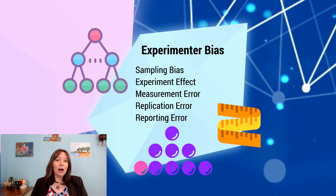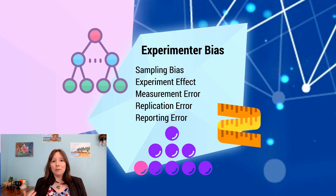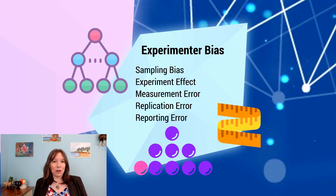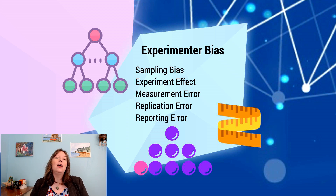Once we started including more women, more people of color, more working-class individuals, and more people with disabilities, we found that some psychological theories were more complex than previously thought. Because of this, we want to get enough diverse people in our study to avoid sampling bias.